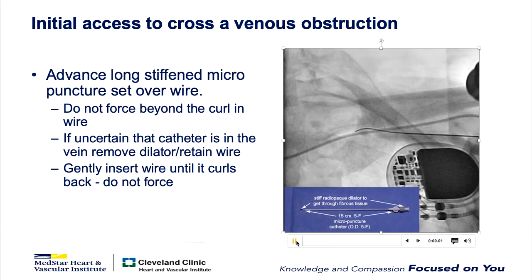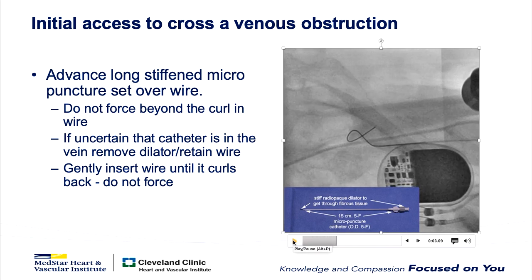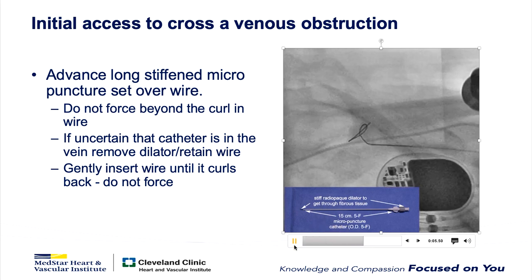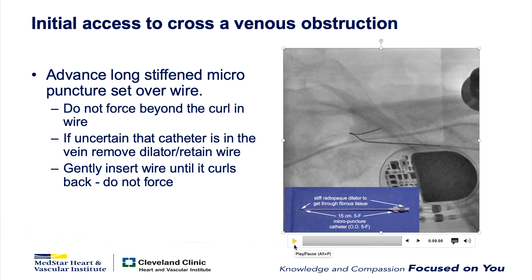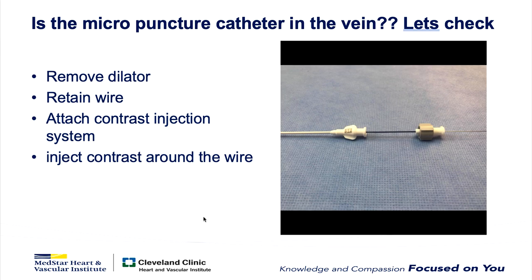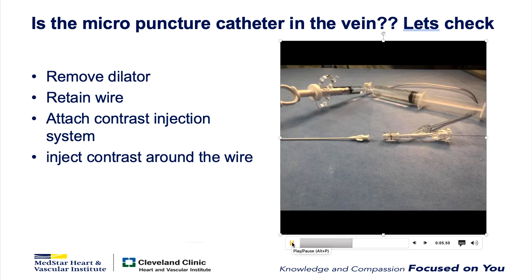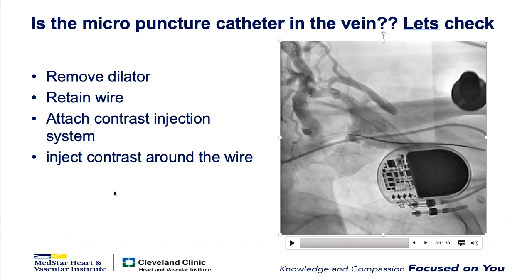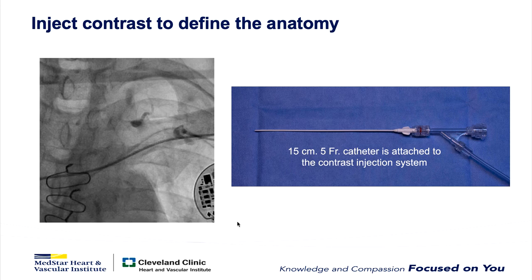To advance the long stiffened micropuncture catheter, once the wire is in, we advance the catheter. It's important to have a stiffened micropuncture catheter because fibrous tissue can be very stiff — without a stiffened dilator it's hard to get through the occlusion. Advance gently and don't push. To confirm the tip of the micropuncture catheter is in the vein, remove the dilator while retaining the wire, attach the injection system around the wire, and inject contrast — this confirms you're correctly positioned.